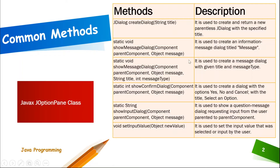The common methods are: createDialog, which creates a dialogue that accepts a parameter of string title — it is used to create and return a new parentless dialogue with a specified title. Then static void showMessageDialog with component parent and object — it is used to create an information message dialog. Another showMessageDialog variant takes component, object message, string title, and int message type.